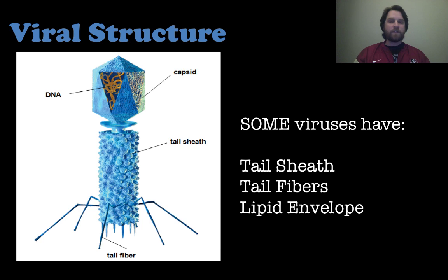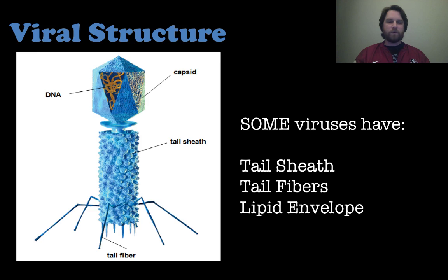So in this case, a bacteriophage will have a tail sheath and tail fibers, whereas other viruses do not.